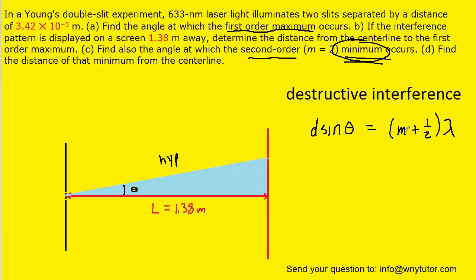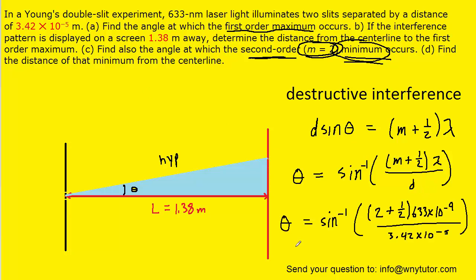We're looking for the angle, so we solve for theta by dividing both sides by d and taking the inverse sine. We can then plug in all the known values. It's a second order minimum, and the question tells us that m equals 2, so we'll plug 2 in for m. The wavelength is still the same—remember to convert it by multiplying by 10 to the minus 9th—and d is the same as before. When you compute that, you should get approximately 2.65 degrees for the angle to the second order minimum.